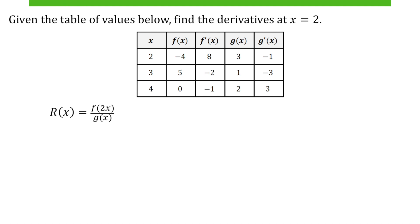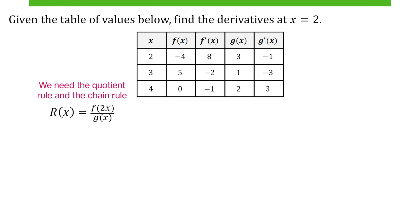Okay, next one. We have a fraction, so that's the quotient rule, and another composite function, so we're going to use the quotient rule and the chain rule. Quotient rule is low d high minus high d low, all over low low. Low d high — the derivative of the top function is our composite, so the derivative of the outside, keep the inside the same, times the derivative of 2x which is 2. That's low d high minus high f of 2x, d low is g prime of x, all over low low.